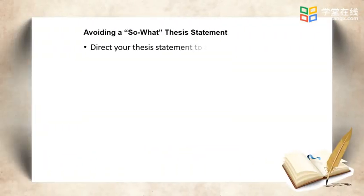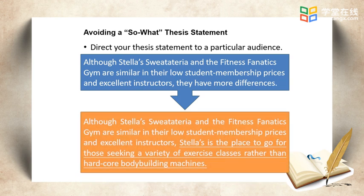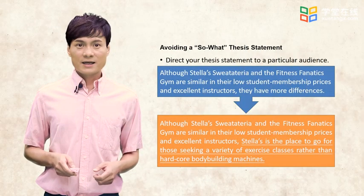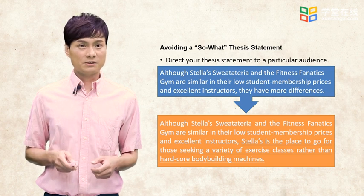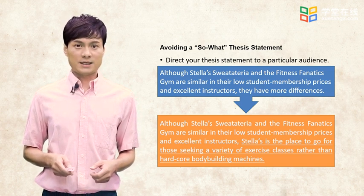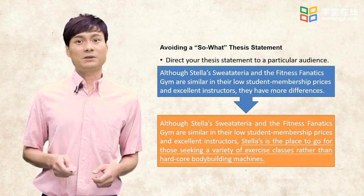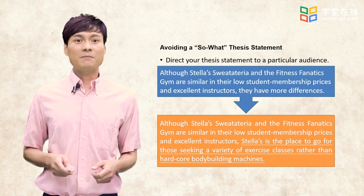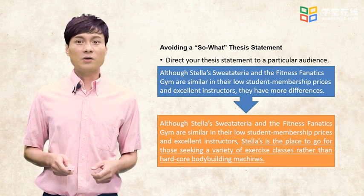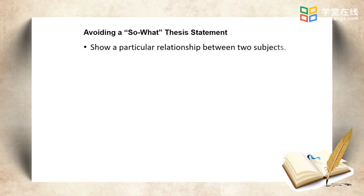A third way of avoiding a so-what thesis statement is to direct the thesis statement to a particular audience instead of the audience in general. Compare the original version and the revised version. The difference lies in the new idea that Stella's is the place to go for those seeking a variety of exercise classes rather than only being able to use hardcore bodybuilding machines. The key point implies contrast: Stella's provides a variety of exercise classes while the Fitness Fanatics Gym is equipped with hardcore bodybuilding machines. Therefore, the two gyms serve different customers. Such a thesis statement does not tell which gym is better; instead, it helps gym lovers in a local area — a particular audience — to choose the one which is more suitable to them.